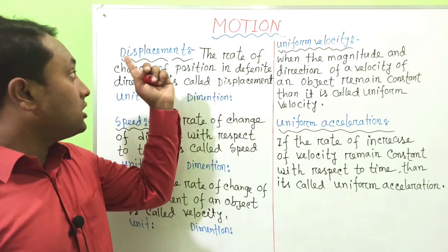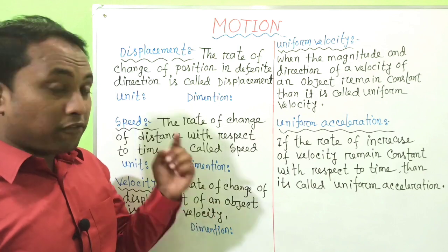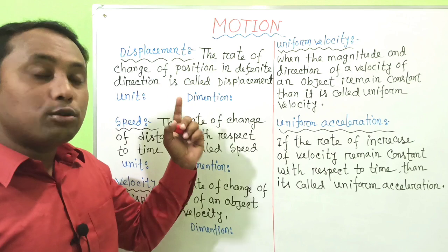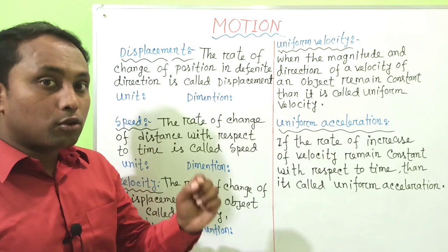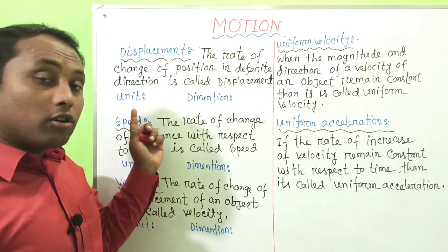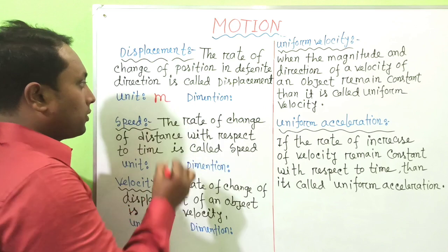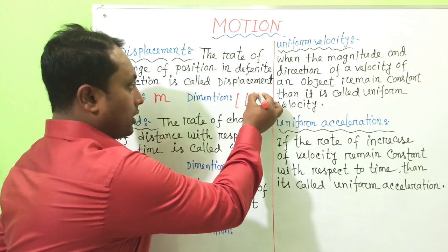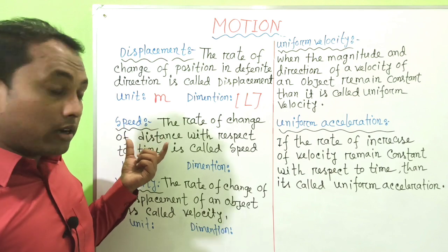Here is the first definition — Displacement. The rate of change of position in a definite direction is called displacement. According to the definition, the direction of displacement is fixed, so displacement is a vector quantity. The unit of displacement is meter and the dimension of displacement is L.